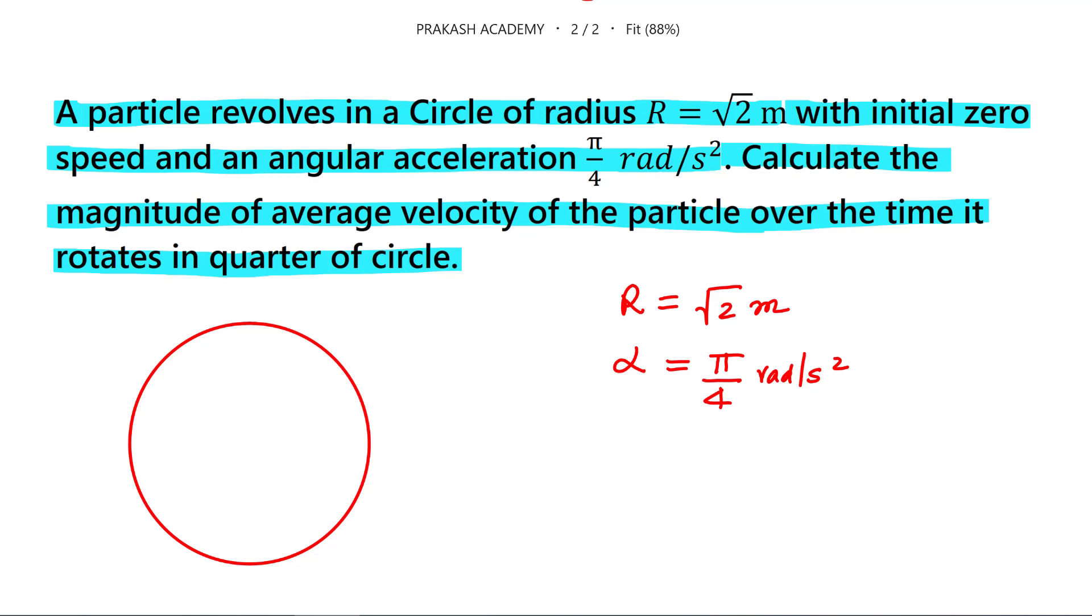And this has rotated to quarter of the circle. So let us try to see what is happening. Initially, this point is somewhere here, let us say. And finally, it has rotated by angle of 90 degree, that is pi by 2, and it has reached to this point, point B.